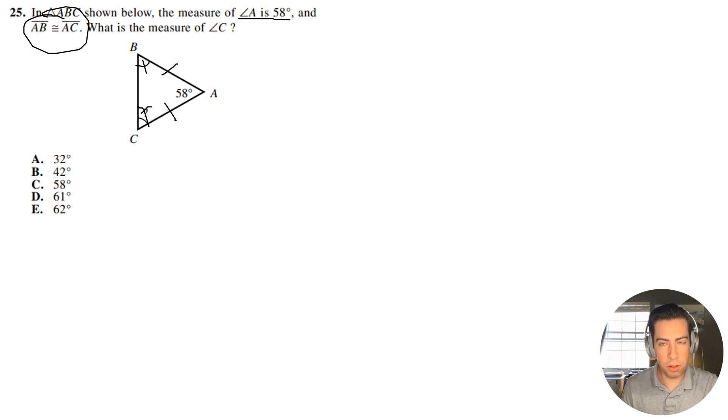So remember, in a triangle, all the angles have to add up to 180 degrees. So if we have this angle A, which is 58 degrees, and if B and C are equal, then it means that we can just write this as two times angle C. And this has equal 180 degrees.